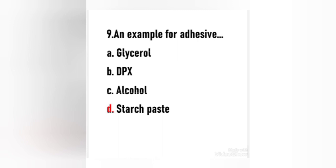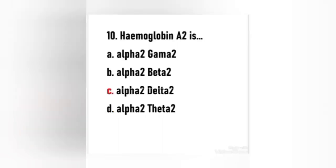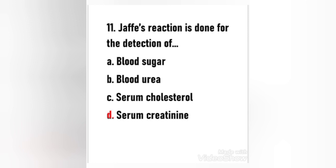Next question: An example for adhesive — (a) glycerol, (b) DPX, (c) alcohol, (d) starch paste. The right answer is option D — an example for adhesive is starch paste. Next question: Haemoglobin A2 is — (a) alpha 2 gamma 2, (b) alpha 2 beta 2, (c) alpha 2 delta 2, (d) alpha 2 theta 2. The right answer is option C — haemoglobin A2 is alpha 2 delta 2.